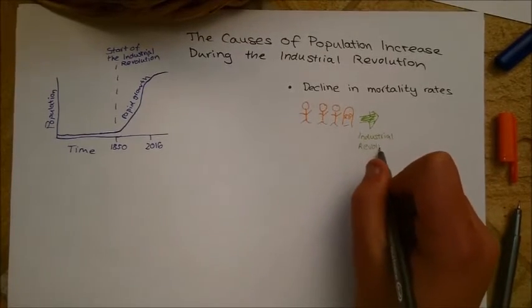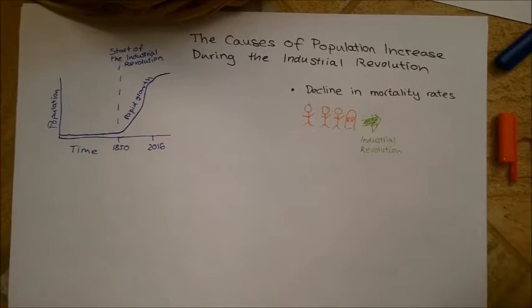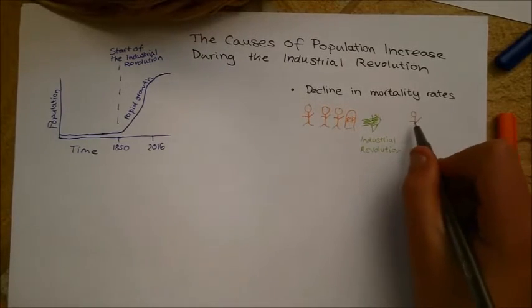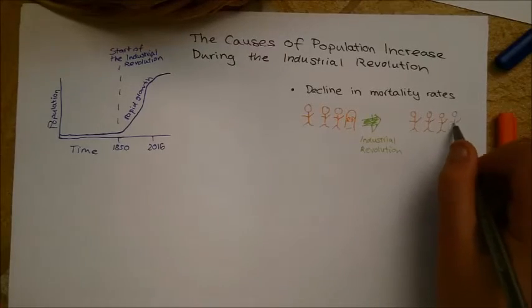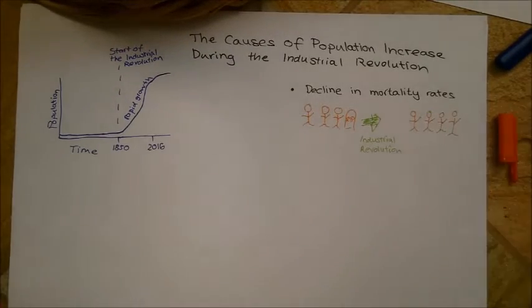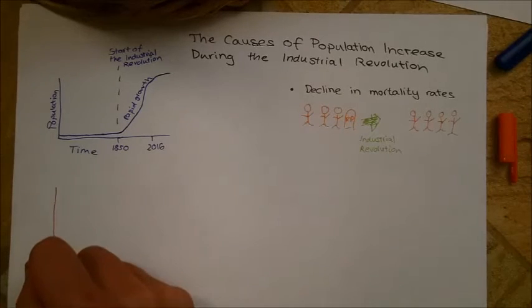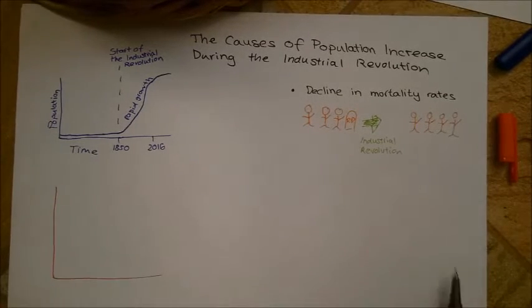Aside from these improvements in technology, climatic and environmental factors also played a role in the declining mortality rates. For example, improved climatic conditions may have led to higher crop yield.